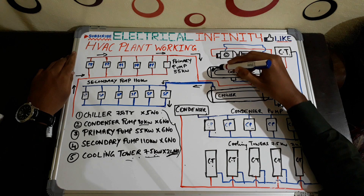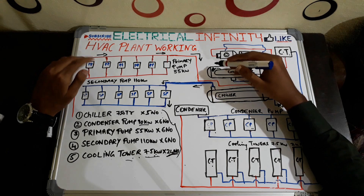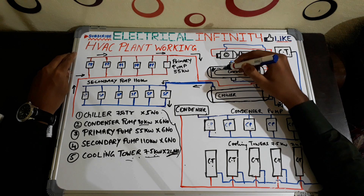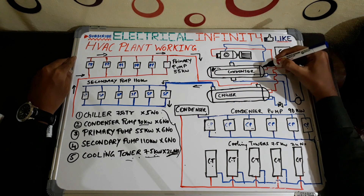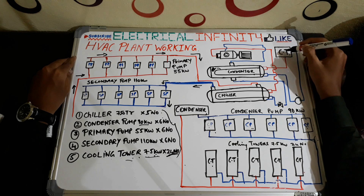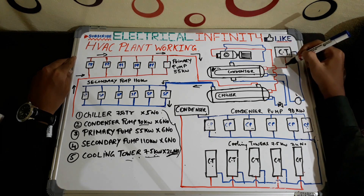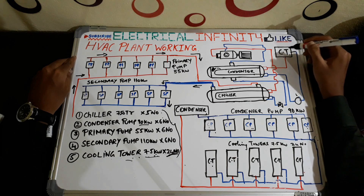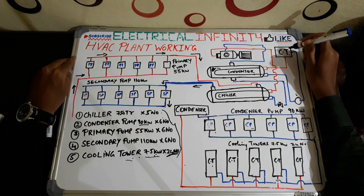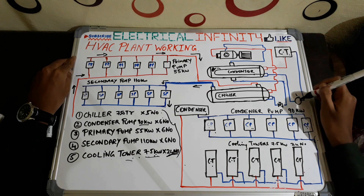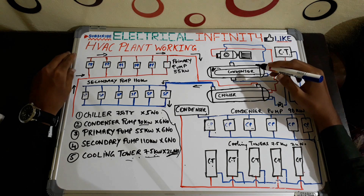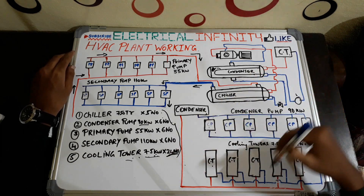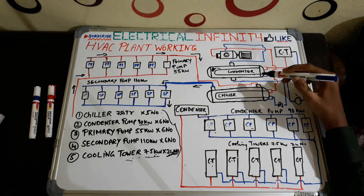There is a heat exchange between the refrigerant and the cooled water. After the heat exchange, the refrigerant gets cooled down and there is a rise in temperature of the cooled water. After the cooled water gets heated up, it is transferred to the cooling tower for cooling. The hot water — shown by the red line — is transferred to the cooling tower, cooled down again, and sent back to the condenser pump, then to the condenser for cooling the refrigerant.